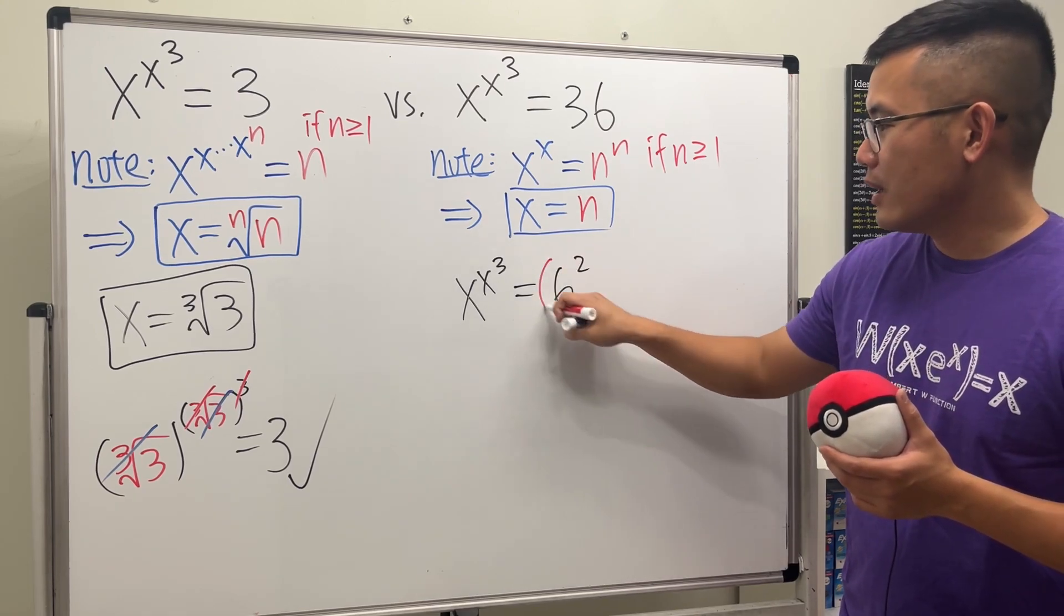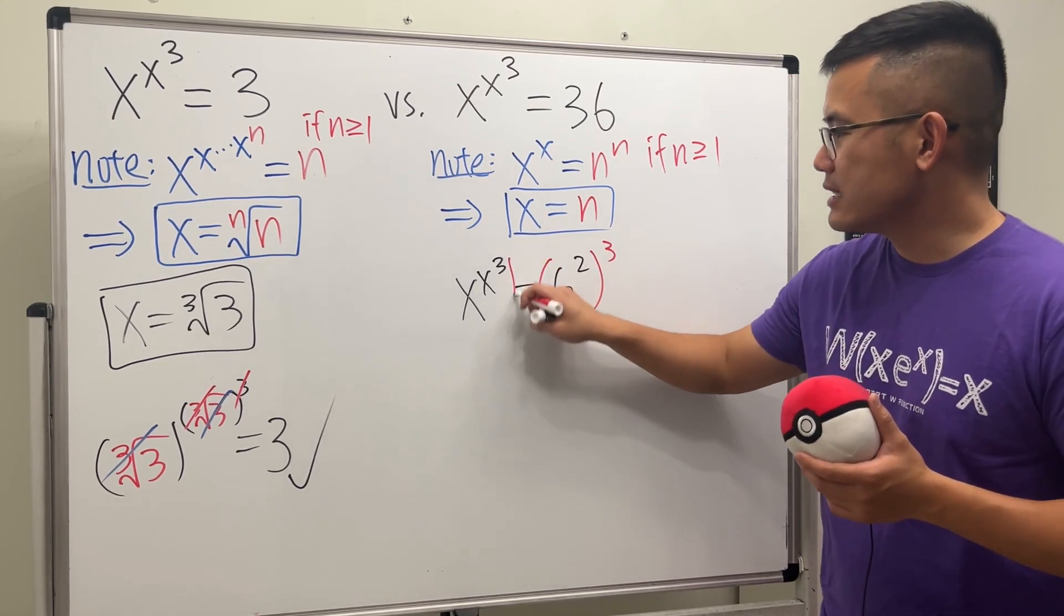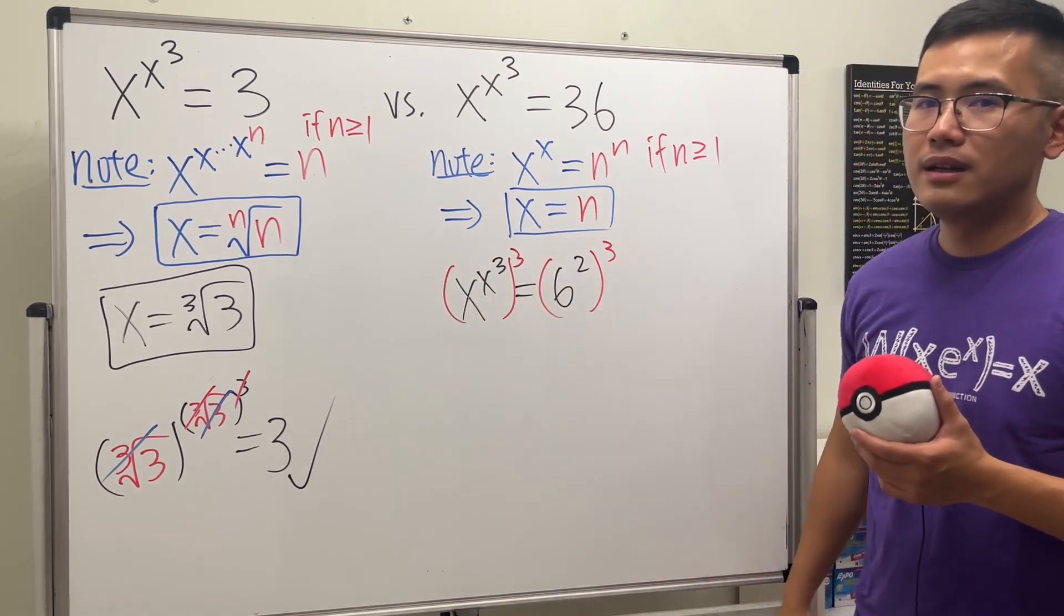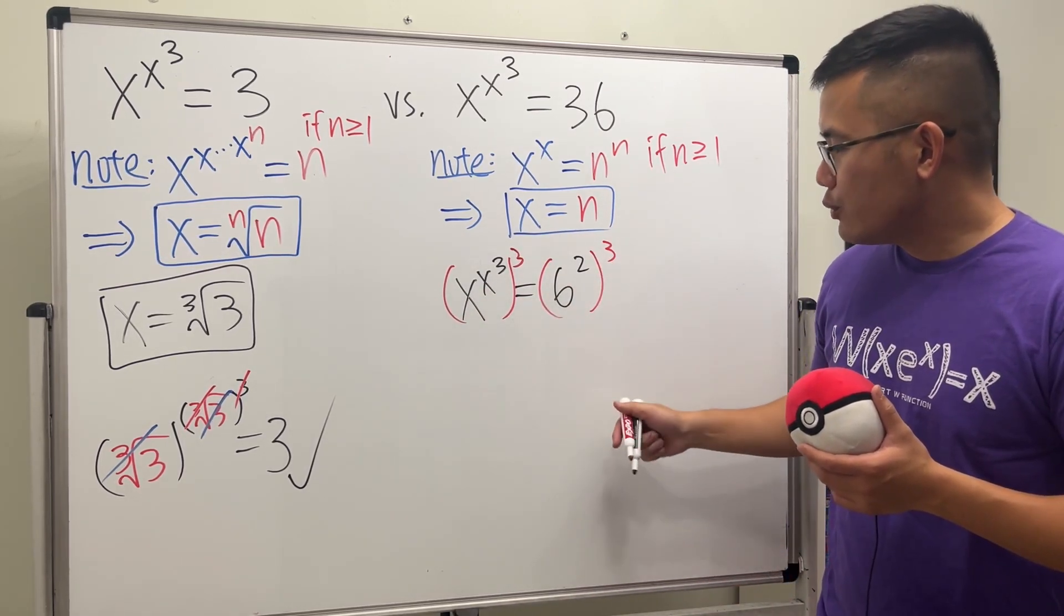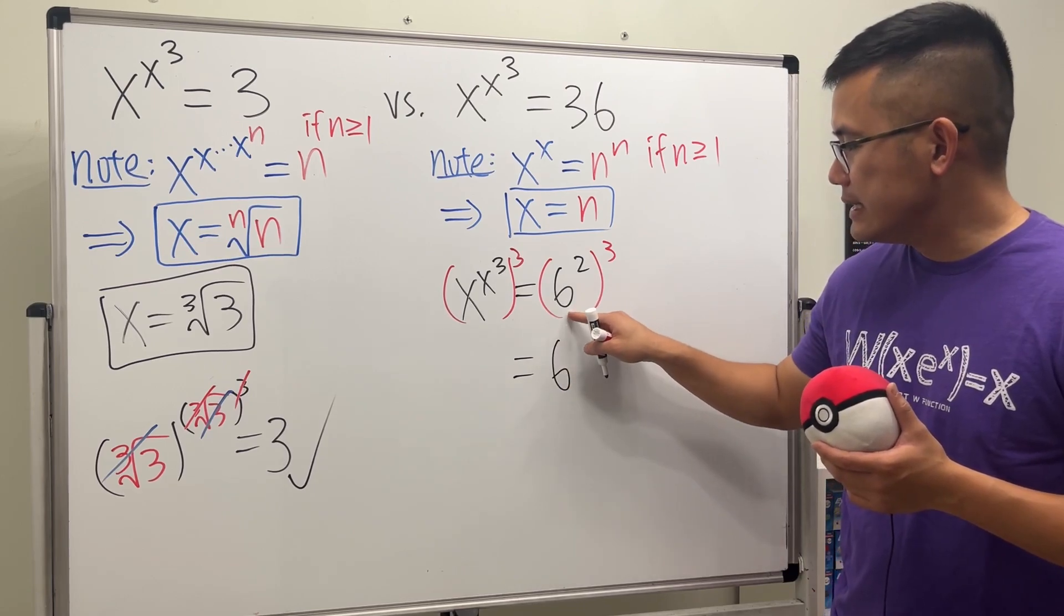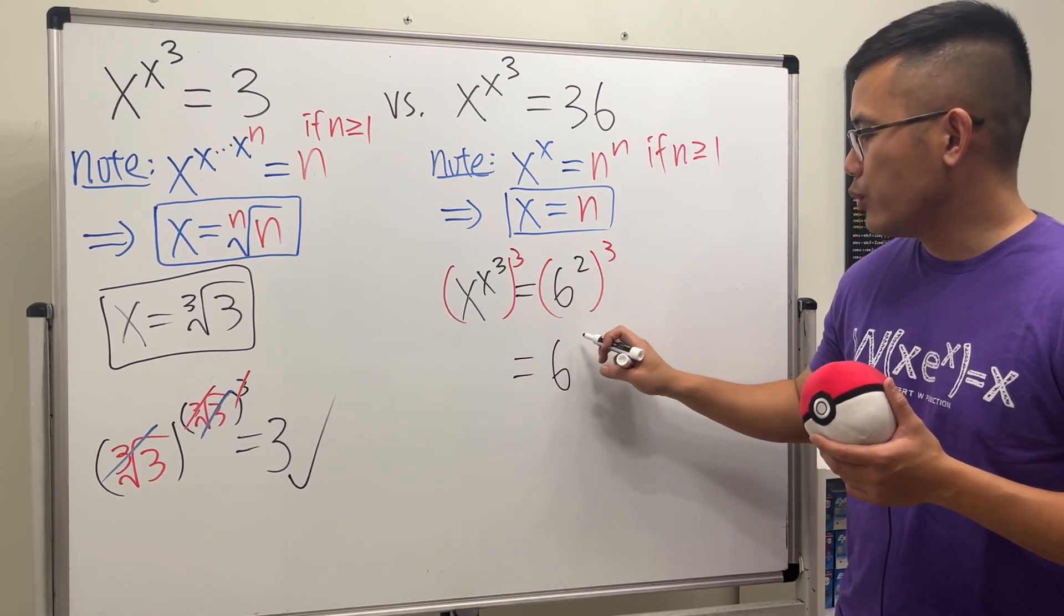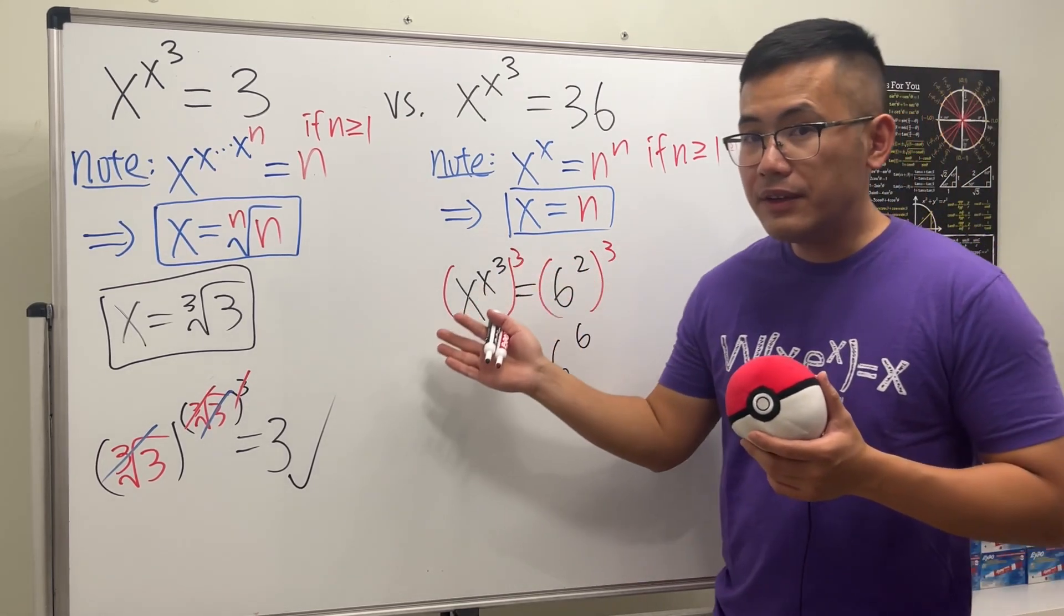So how can we make the 2 to become a 6? Don't say add 4 to it. Think about multiplication. In order for us to multiply a 2 to get a 6, we are raising both sides to the third power.